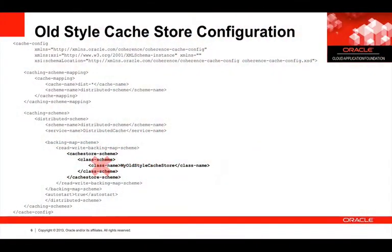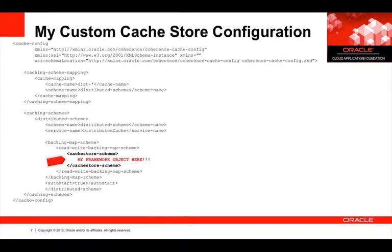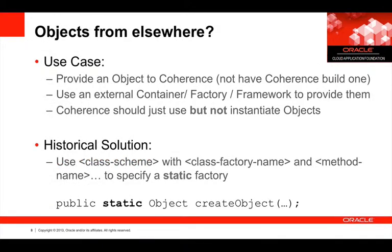Using objects from elsewhere — let's take a very simple challenge. I've decided to create a cache store, something like I used in part one of this series, but it turns out what I really want to do is actually get this cache store instantiated from somewhere else. I really want to say to Coherence: I'd like a cache store, but my framework or my container or some other piece of infrastructure is going to provide the object.